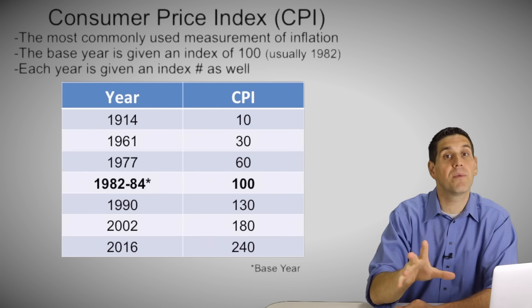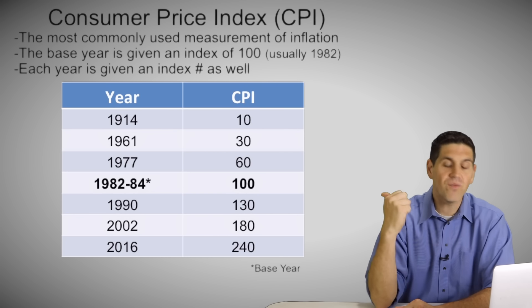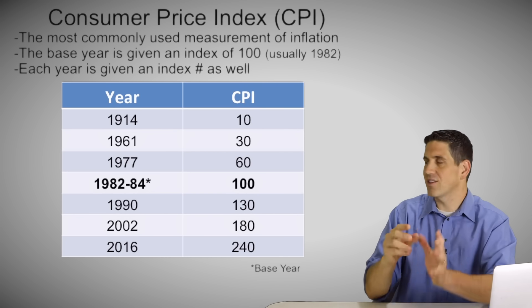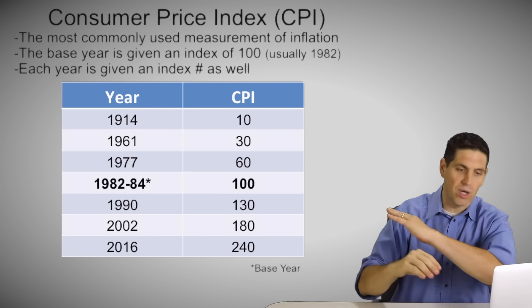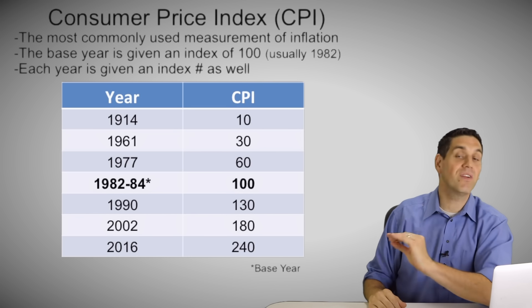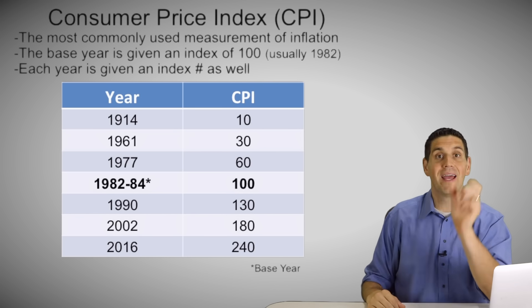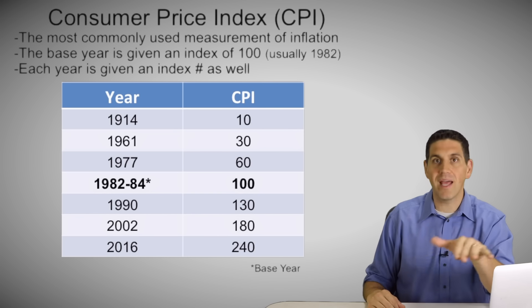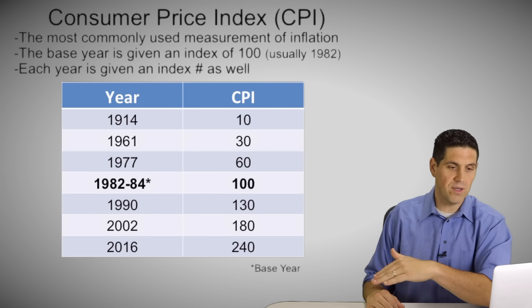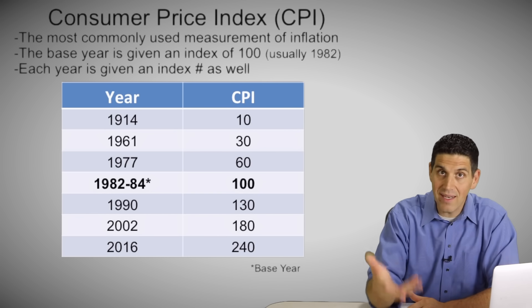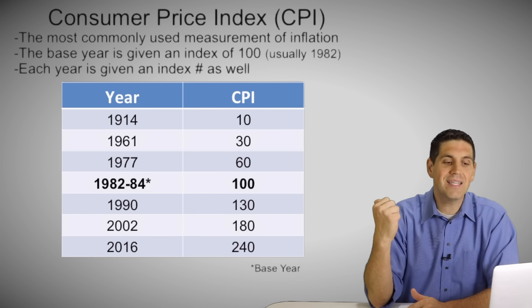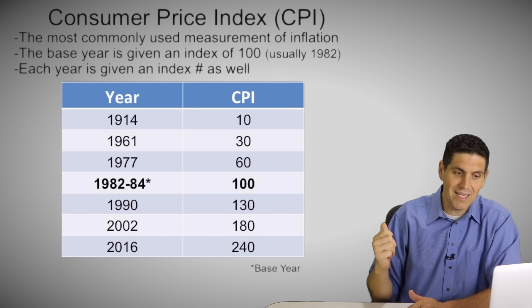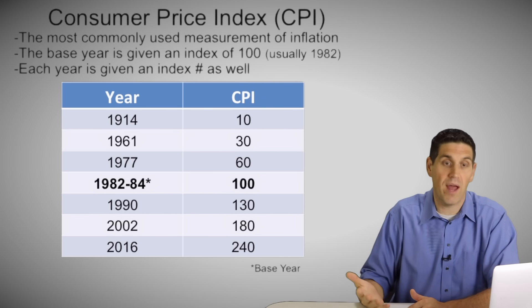It'll make more sense with an example — these are actual numbers for the United States. You have to recognize that 1982–84 is the base year. We'll say 1982 is the base year and it's given a number of 100 — meaning it's the base year, or prices haven't changed since the base year. So 100 is just an index number, not 100%. Every other year is also given a CPI. For example, 1990 is 130, meaning prices increased 30% since the base year — so between 1990 and 1982, prices went up 30% in the United States.